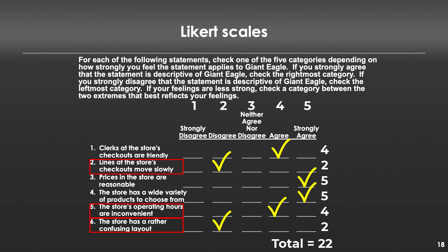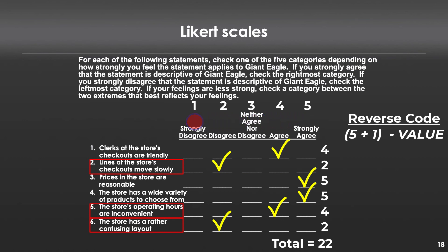To reverse code them, it's a very simple calculation. We say how many numbers do we have — we have five. We add one, that's six, and then we subtract the number from that. What that will do is: if you have a five, six minus five is one, so it flips it to the other side. If you have a two, six minus two is four, which flips that over to the other side. And if you have a three, six minus three is three. So to reverse code those, we simply run them through that calculation and we get these values.